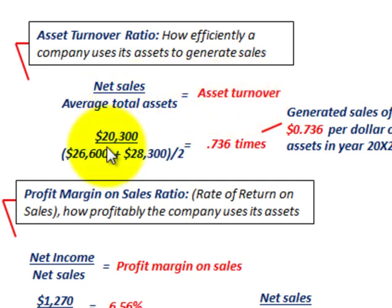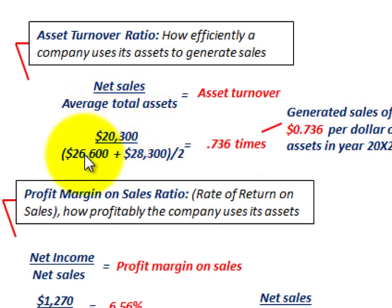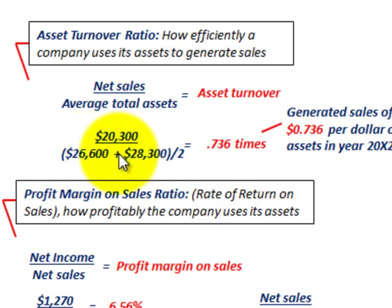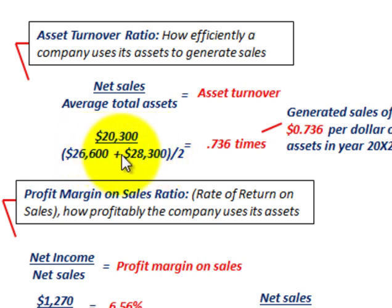Our net sales for 20x2 were $20,300,000. For our average total assets, for 20x2 we had $26,600,000, plus for 20x1 that amount was $28,300,000. We total those and divide by 2 to determine their average.